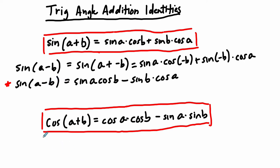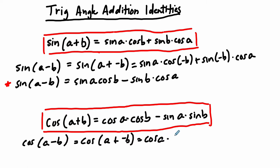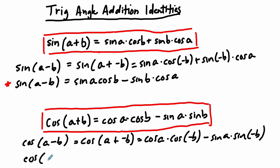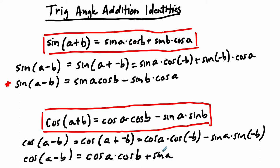We can do the same thing for the cosine of A minus B. That equals cosine of A plus negative B, which is cosine of A times cosine of negative B minus sine of A times sine of negative B. The cosine of A minus B then equals cosine A times cosine B, since cosine of negative B equals cosine of B for even functions. And the sine of negative B is the opposite of sine of B, so that negative multiplies through to give us plus sine A times sine B.